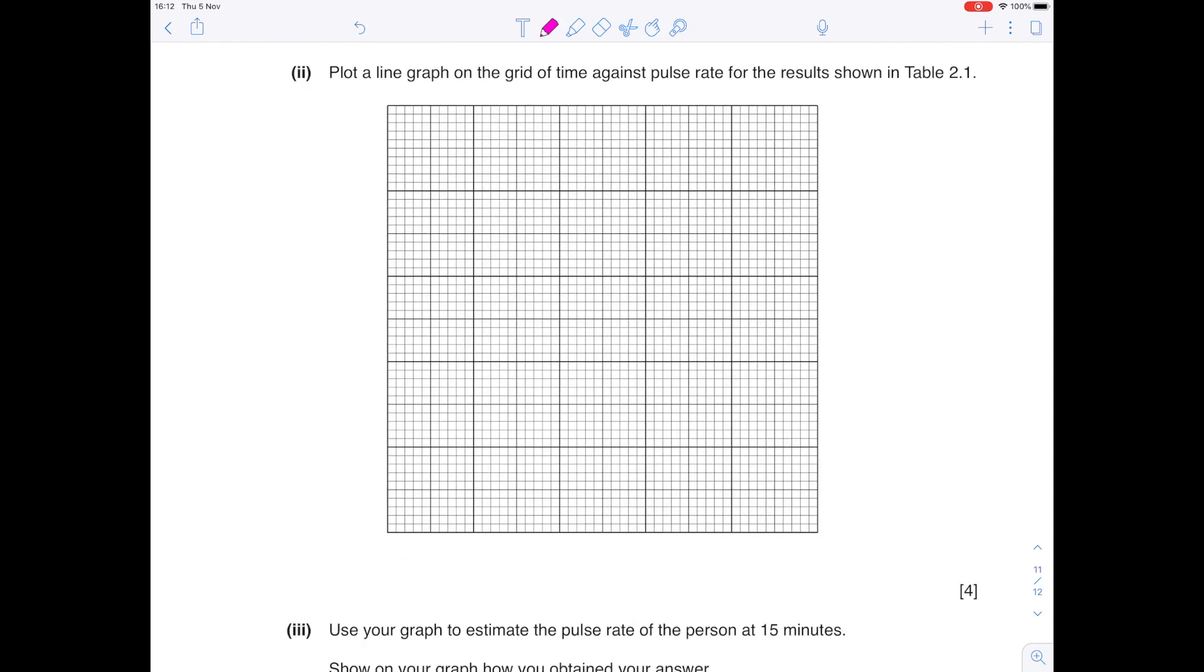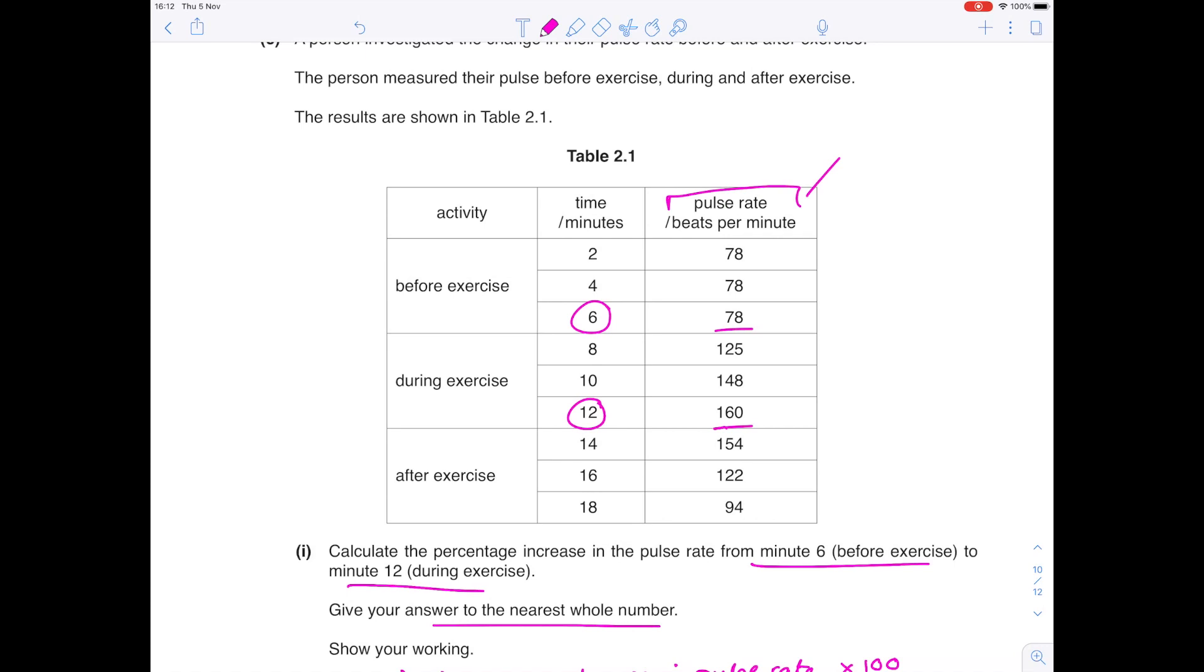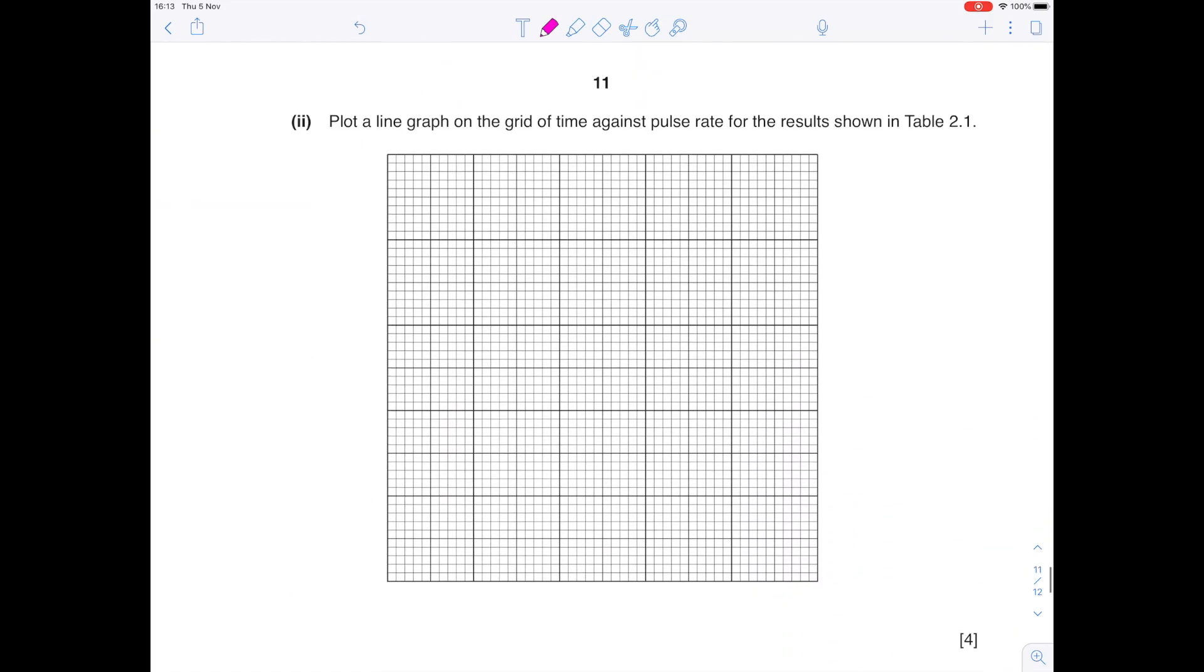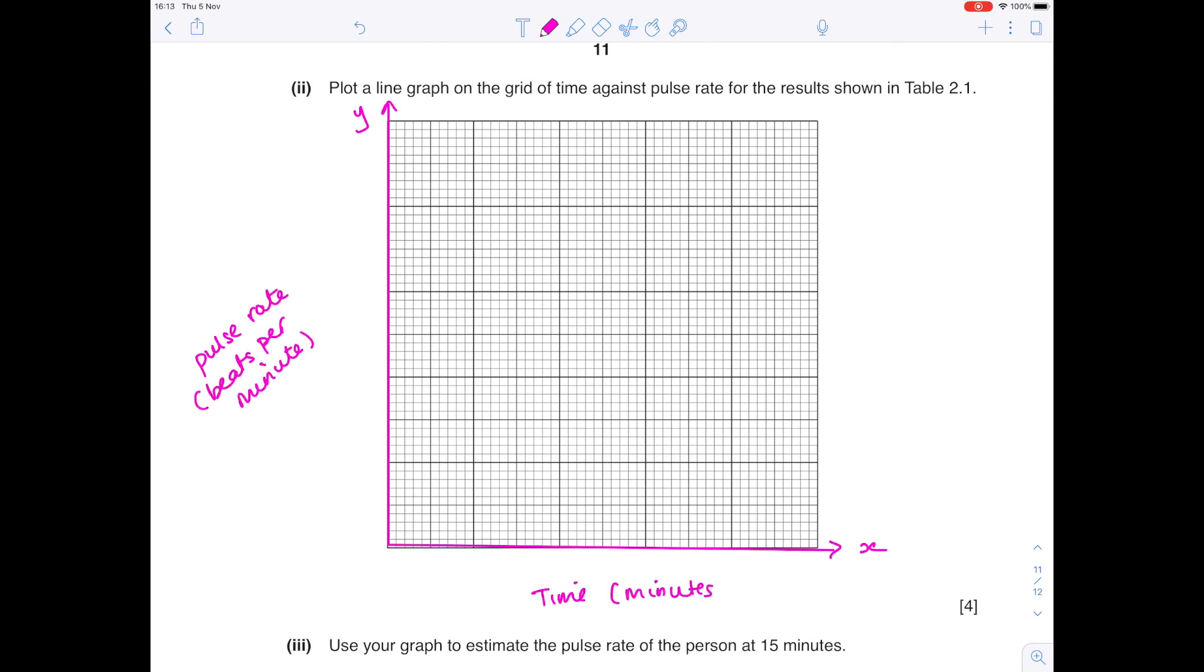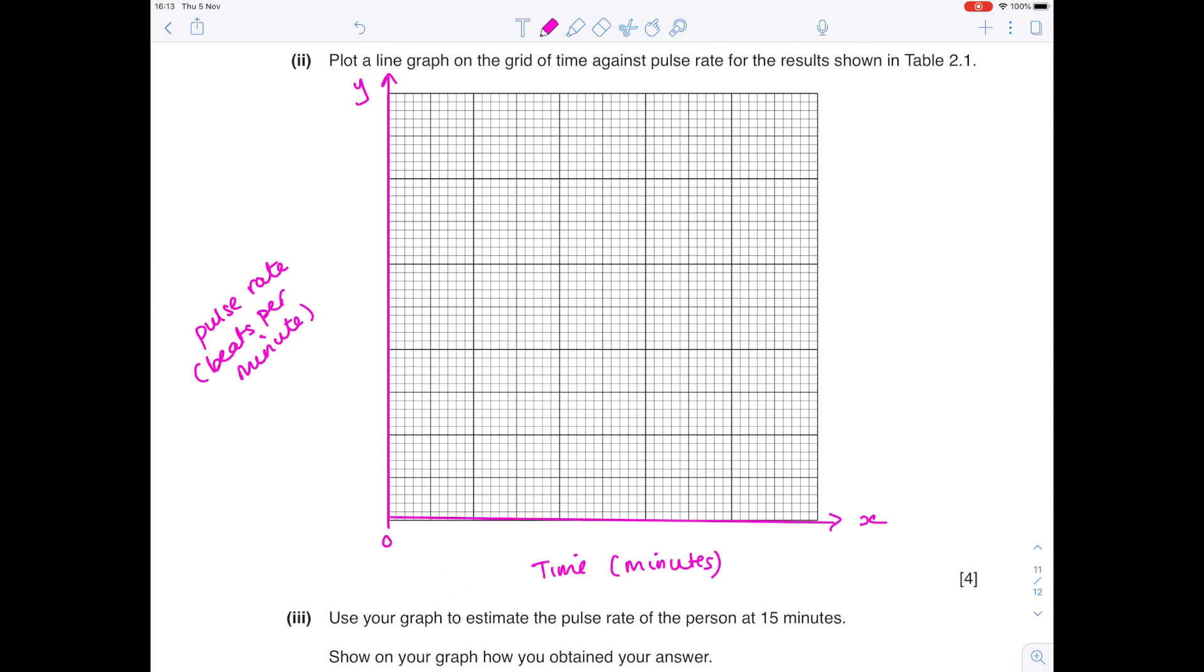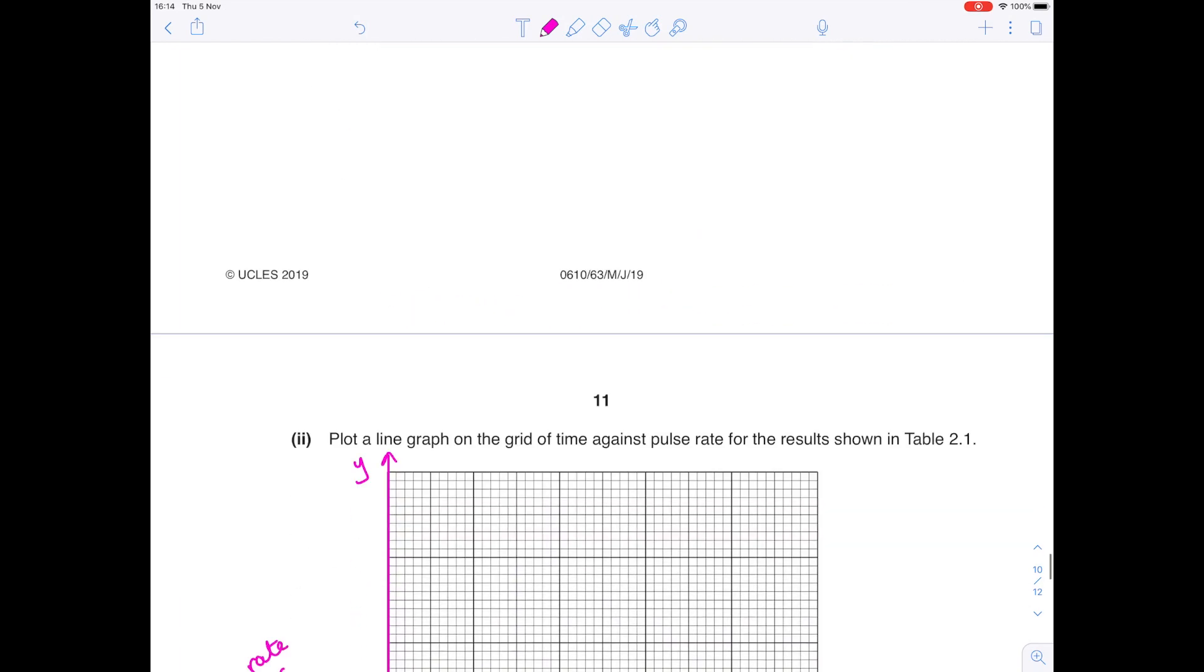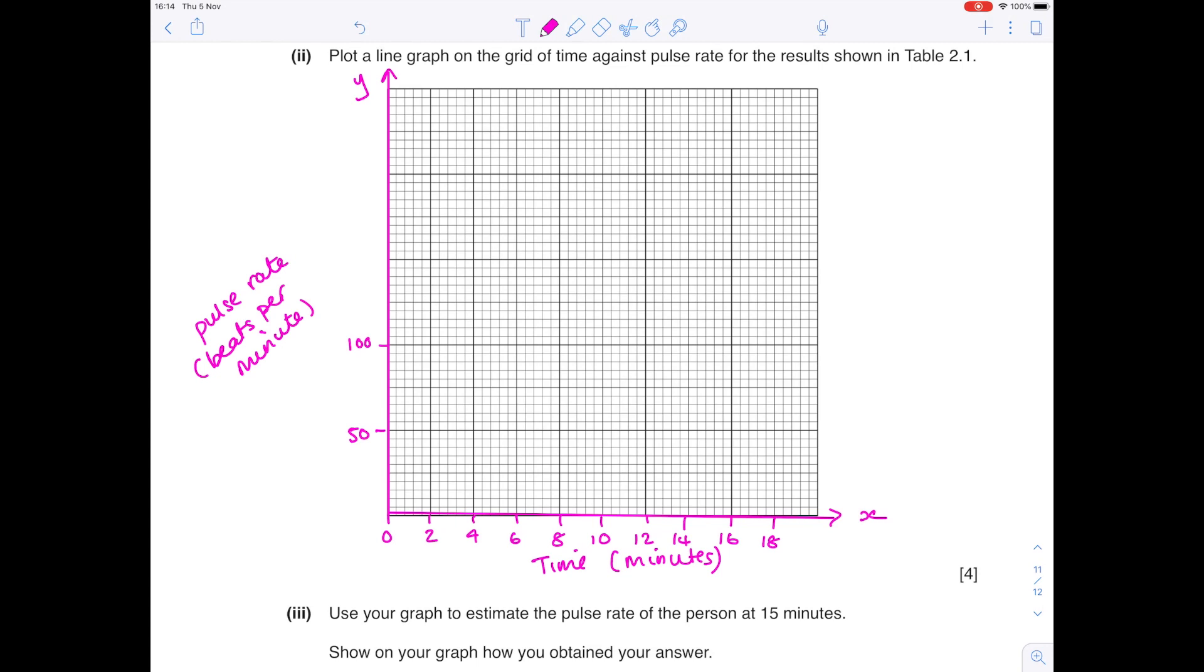Plot a line graph on the grid of time against pulse rate for the results shown in Table 2.1. So let's work out what needs to go on which axis. The pulse rate is what you're measuring, so it's your dependent variable. And that means it needs to go on the y-axis. Your time is what you're changing, so it's your independent variable, which remember must go on the x-axis. Now you must make sure you pick a sensible scale. Don't forget your labels and your units. So in terms of your time in minutes, it needs to go from 2 minutes up to 18. You need to occupy as much of the graph paper as possible. That looks like a nice scale to me. In terms of your pulse rate, we're starting at 78 and we're going all the way up to 160. So I'm going to go up in 50s.